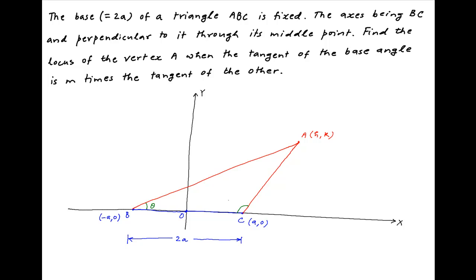Let's assume that the base angles of triangle ABC are theta and phi respectively. Now drop a perpendicular from the vertex A onto the x-axis and let's assume that the foot of the perpendicular is N.